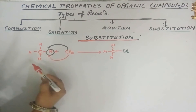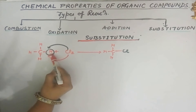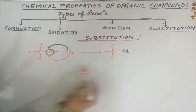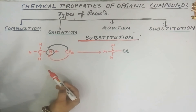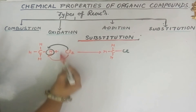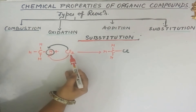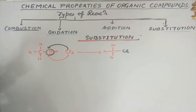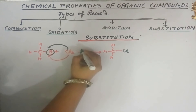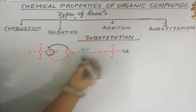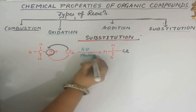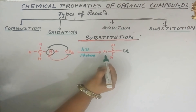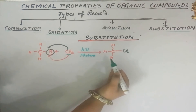When an atom or group of atoms is replaced by another atom or group of atoms, the reaction is known as a substitution reaction. Here, since we are substituting with chlorine, the reaction is also known as chlorination. This special reaction takes place in the presence of sunlight, represented as hν (photons). In the presence of sunlight, chlorine replaces hydrogen from methane, and this reaction continues further.